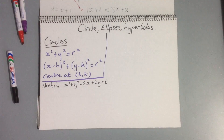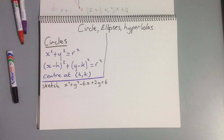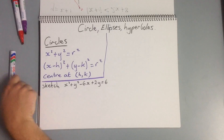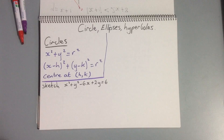In this tutorial, we're going to look at sketching circles, ellipses, and hyperbolas. So to start off with, we'll have a look at our circles.